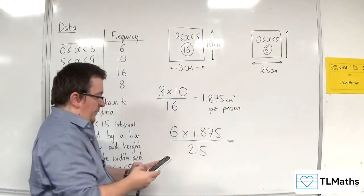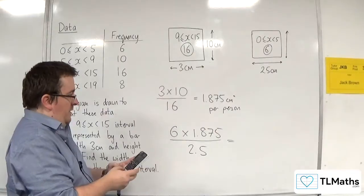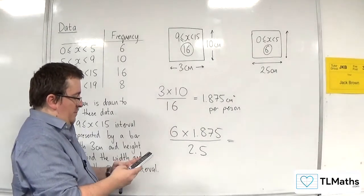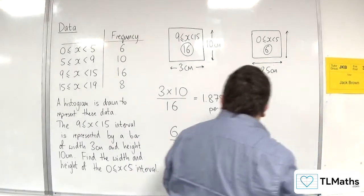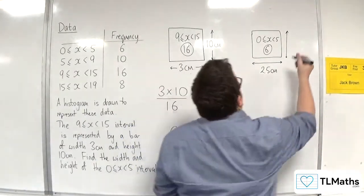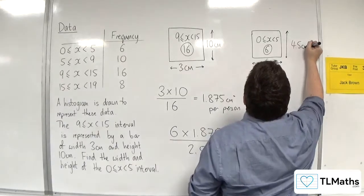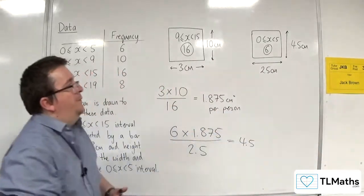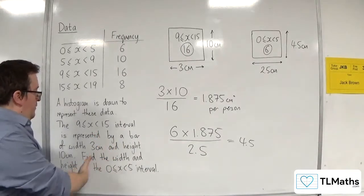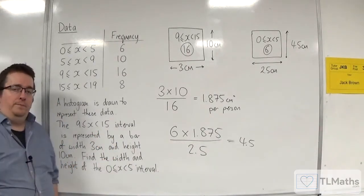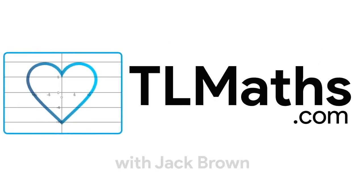So, 6 lots of the 1.875, and then divide by 2.5, and we get 4.5. And so, that's telling me that the height of my bar has to be 4.5 centimeters. So, I now have the width and height of the 0 to 5 interval.